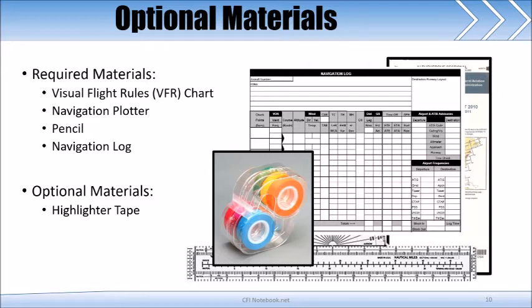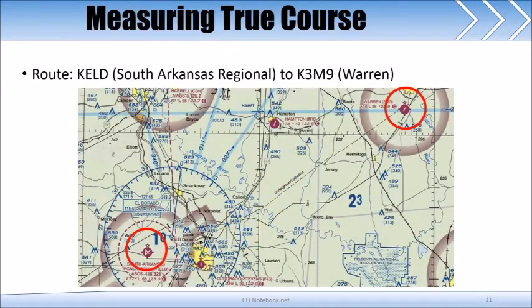Now that we know what we need, let's jump into the scenario and determine a true course. Let's say we are planning a flight from South Arkansas Regional to Warren.